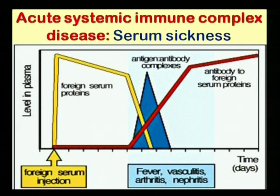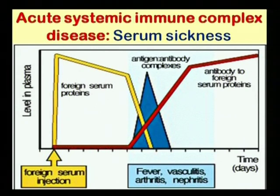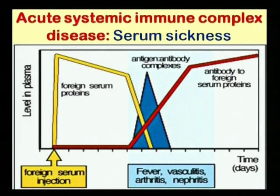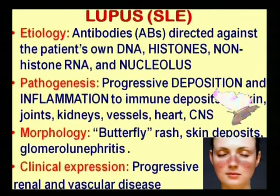In passive immunization, foreign serum is used to treat some pathogenic conditions. In that case, the higher amount of serum proteins along with foreign serum antigens produce immune complexes. This creates fever, vasculitis, arthritis, and nephritis.